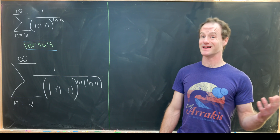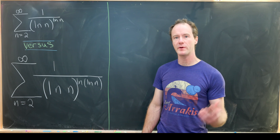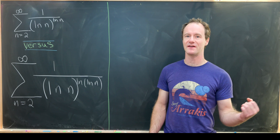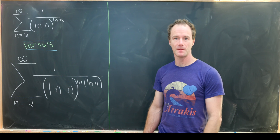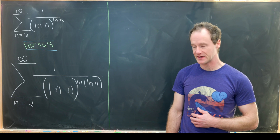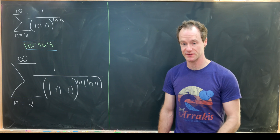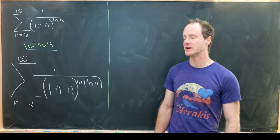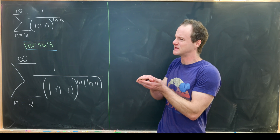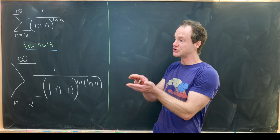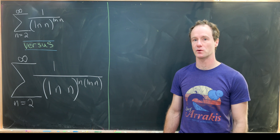Here we have a Calculus 2 style problem where we look at the convergent or divergent properties of two infinite series. What we will find is that one of our infinite series converges and the other one diverges, although they look very similar. Furthermore, this tells us that we have found something close to a turnover point between convergence and divergence.